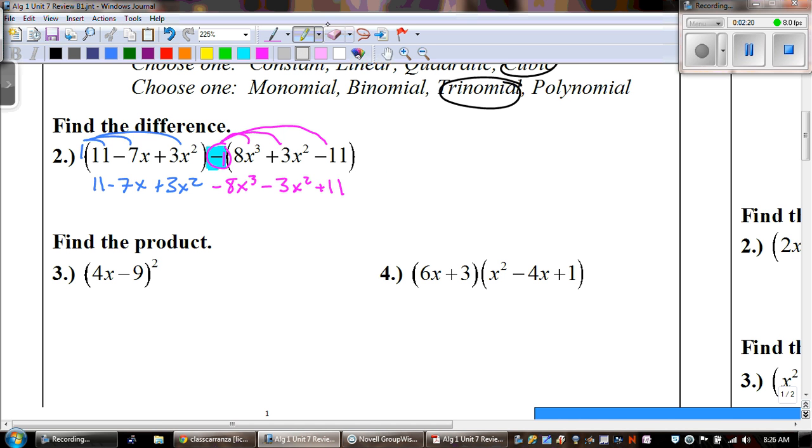And the negative times a negative is positive 11. And now, just like we did in number 1, we're going to combine like terms. So, the first is the negative 8x cubed, and that's all by itself. Then, we're looking at the squares. And positive 3x squared and negative 3x squared. Those cancel.